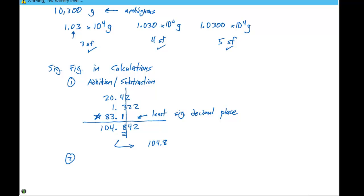The second rule comes into play when we have multiplication or division. And the rule's a little bit different. The result contains the same number of significant figures as the measurement with the fewest significant figures.